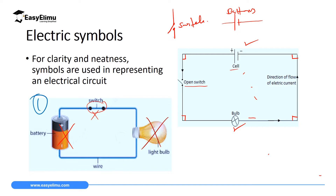In your circuit diagram you must also show the direction of current. At the positive terminal — represented by the long line — current flows out, and at the negative terminal — the short line — current returns. So current flows from the positive terminal, around the circuit in the indicated direction, and returns to the negative terminal of the battery.